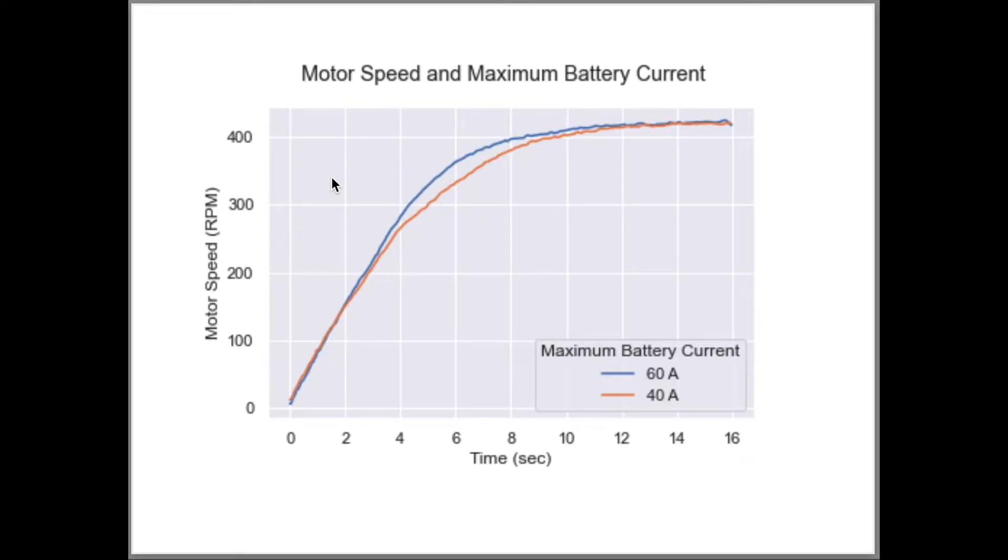This time series plot shows the wheel RPM for the two runs. The orange line is for the 40 amp run, and the blue line is for the 60 amp run. We see the same initial acceleration and same top speed for both runs. The difference is that the acceleration drops more quickly for the lower maximum battery current.